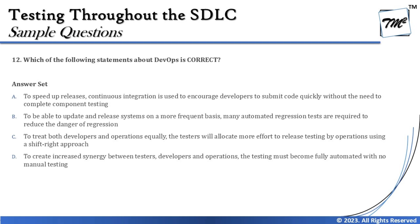The first question on your screen is Question 12, which asks: which of the following statements about DevOps is correct? DevOps is a process which aligns development and testing together, binding them in a way that it continues to move ahead and get into a pipeline where everything is almost automated.